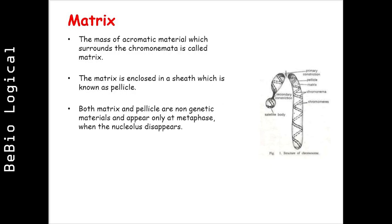The mass of chromatin material which surrounds the chromonemata is called the matrix. The matrix is enclosed in a sheath which is known as the pellicle. Both matrix and pellicle are non-genetic materials and appear only at metaphase when the nucleolus disappears.